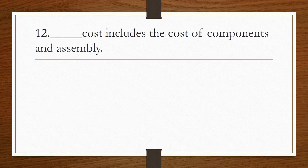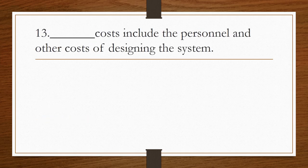Blank cost includes the cost of components and assembly. Answer is manufacturing cost. Blank cost includes the personnel and other costs of designing the system. Answer is NRE cost, that is non-recurring engineering cost.